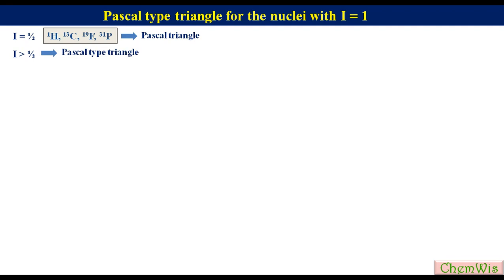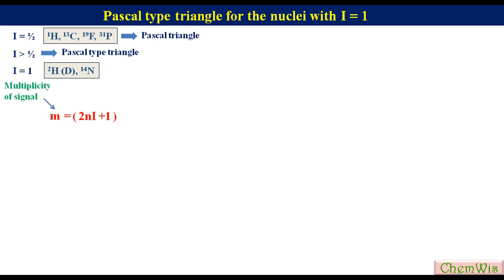In this lecture we are going to discuss the way how to construct Pascal type triangle for the nuclei with i equal to 1, like 2H and 14N, etc. We know that the multiplicity of a signal in NMR is related to i and the number of equivalent coupled nuclei as M = 2Ni + 1, where M is the multiplicity of the signal, N is the number of equivalent coupled nuclei, and i is the nuclear spin quantum number.